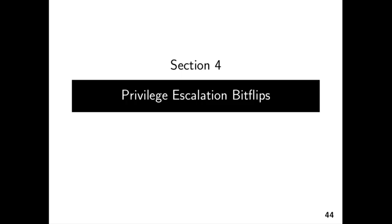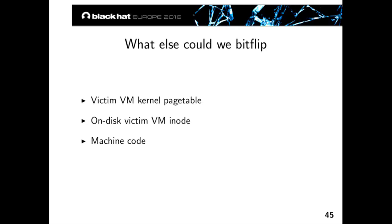Now that we're in the victim VM via OpenSSH, we think about how to escalate privileges from a normal user to root using Flip Feng Shui. We came up with a bunch of targets: the first is based on flipping kernel page table pages that map kernel pages into the victim's address space — if you can manipulate those, you can modify kernel memory, and from there escalate privileges to root.